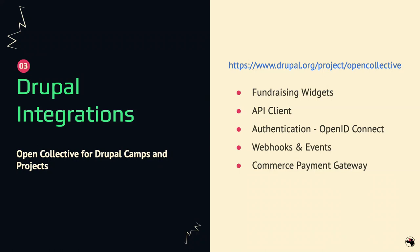Open Collective also has webhooks, meaning that anytime something happens in your Open Collective account, it will send a message to some URL you give it — that's what a webhook is, basically hitting a URL with a JSON payload. One of the Drupal integrations I have is receiving those webhooks and then emitting both PHP and JavaScript events so that you could build your website to respond to things that happen on Open Collective.